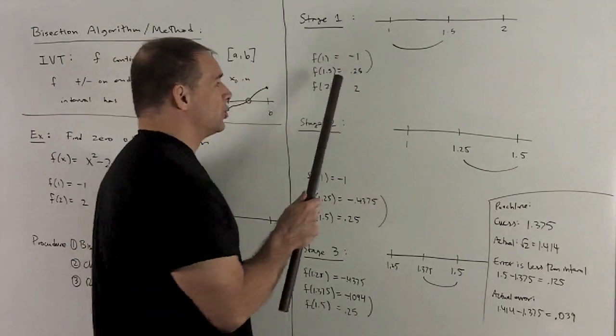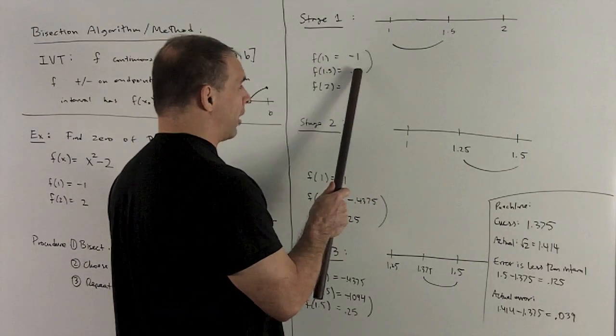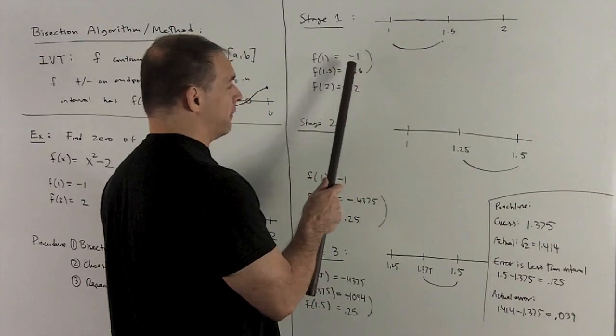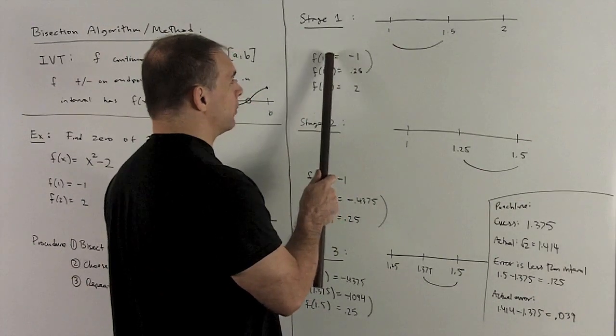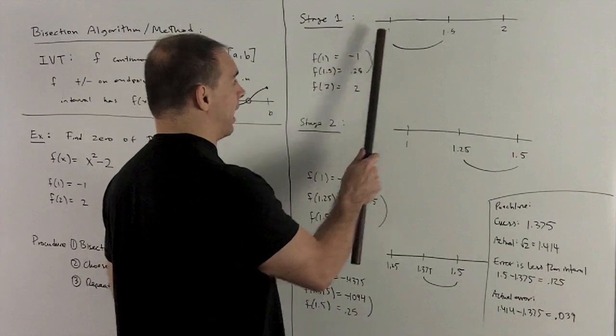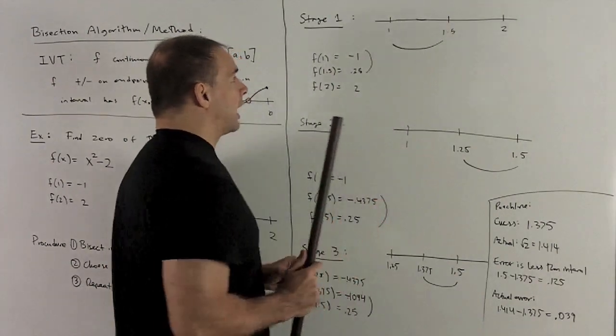So what I'm going to do is I'm going to choose the interval where we have a minus for the value of the other endpoint. So we're going to stick with the interval 1, 1.5. Okay, that's stage 1.